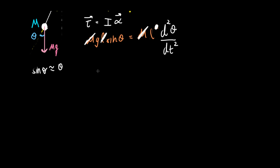So this becomes g times θ is equal to L d²θ/dt². So from here we get that d²θ/dt² is equal to g over L times θ, and I'm going to put a negative sign because it is in the opposite direction.